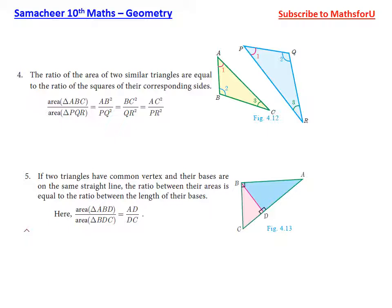If two triangles have a common vertex and their bases are on the same straight line, then the ratio between their areas is equal to the ratio between the lengths of their bases. For example, if B is the common vertex, the ratio of the areas equals AD/DC.